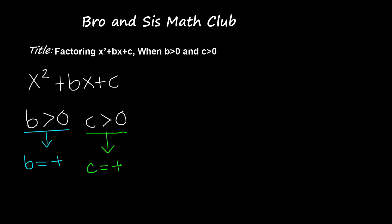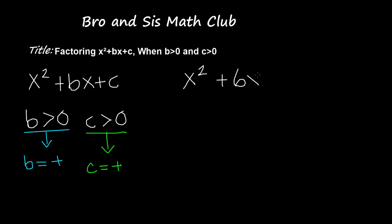So first let's go ahead and write a trinomial that is the same form as x squared plus bx plus c. An example of that would be x squared plus 6x plus 9.